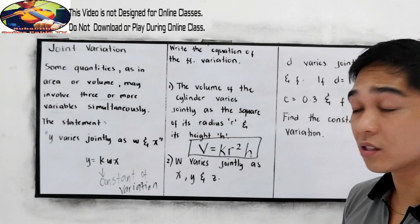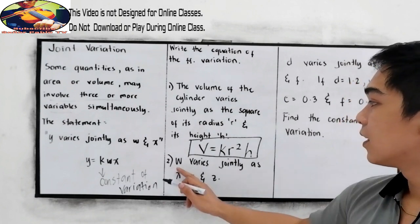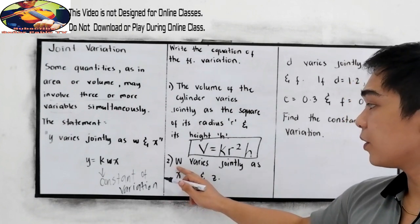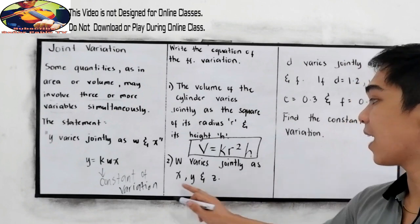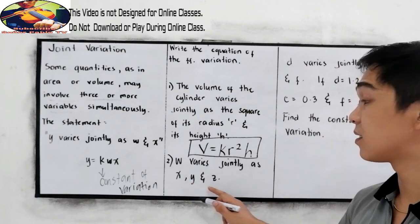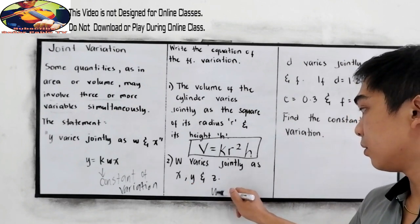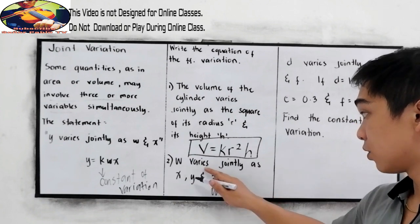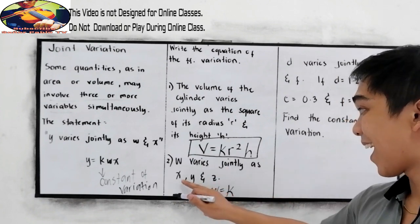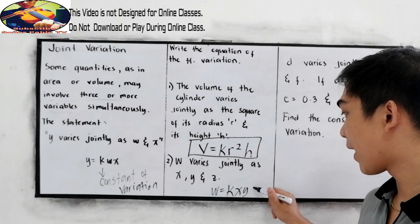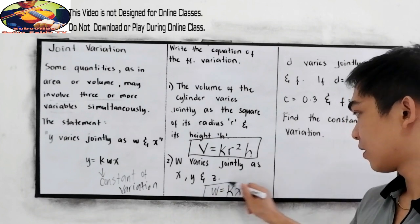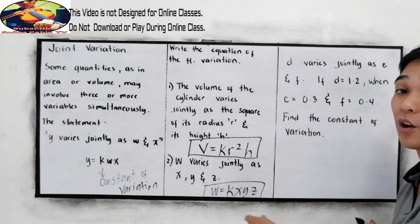Number two, w varies jointly as x, y, and z. So w is equal to k times x times y times z, where k is the constant of variation.